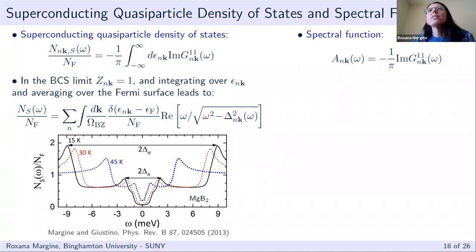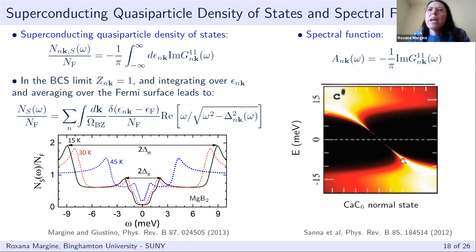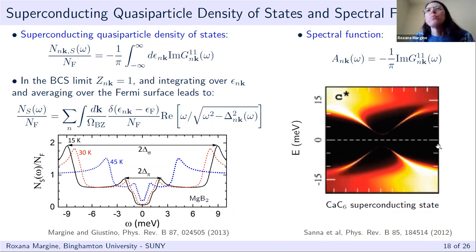The spectral function in the superconducting state can also be obtained from the imaginary part of the diagonal element. Shown here for calcium intercalated graphite C6Ca, in the normal state one band crosses the Fermi level; in the superconducting state the superconducting gap appears and no bands cross the Fermi level.